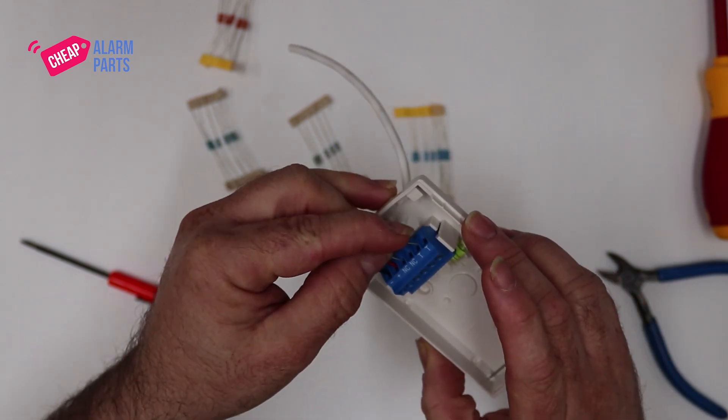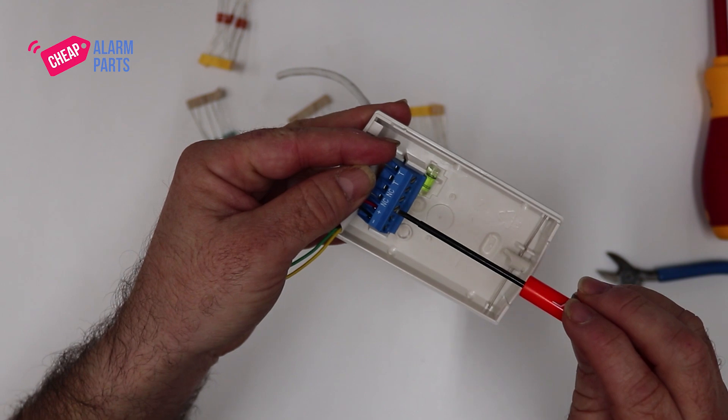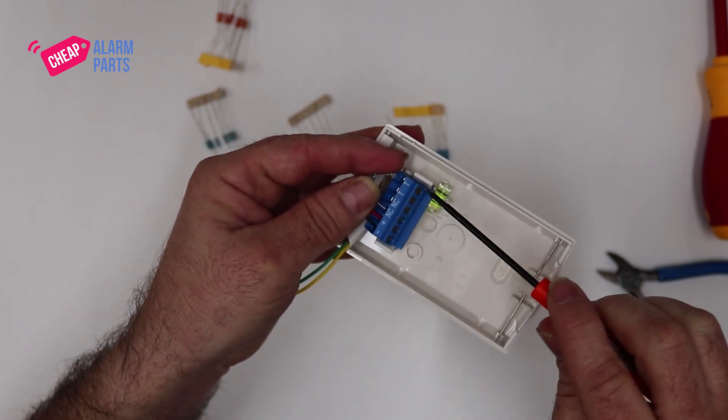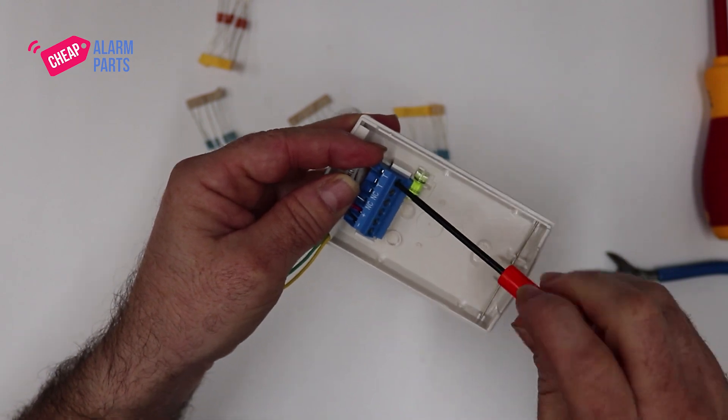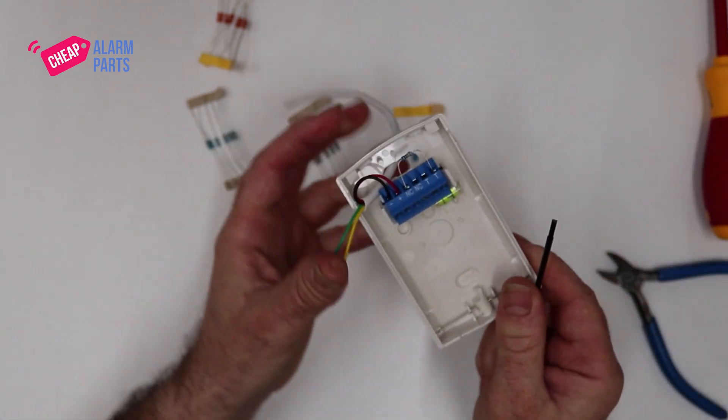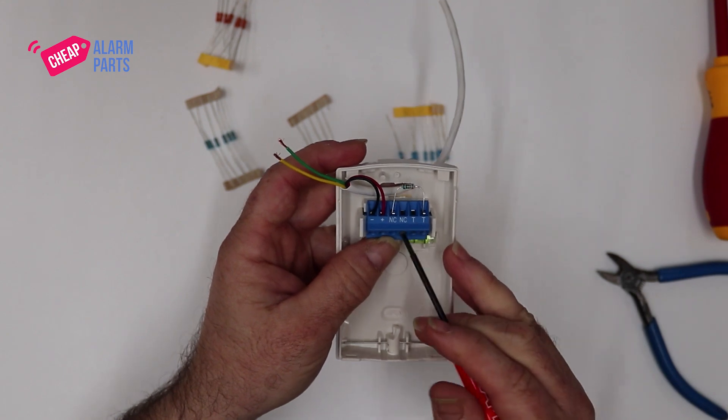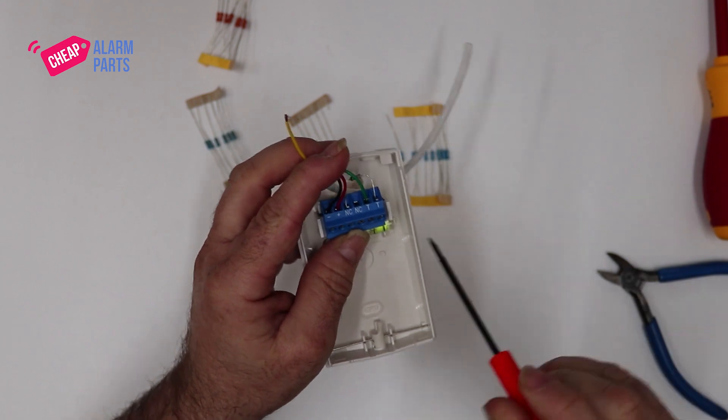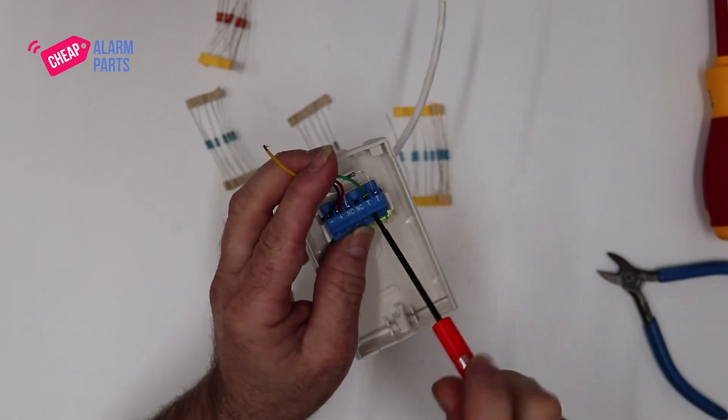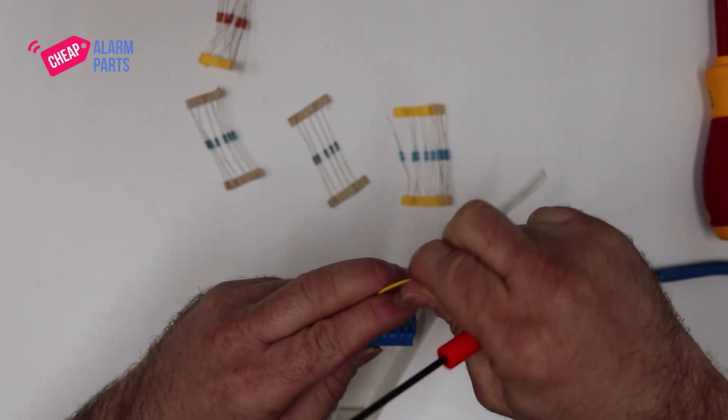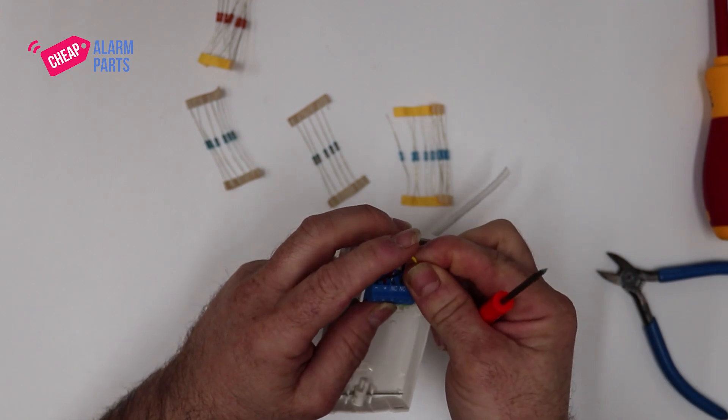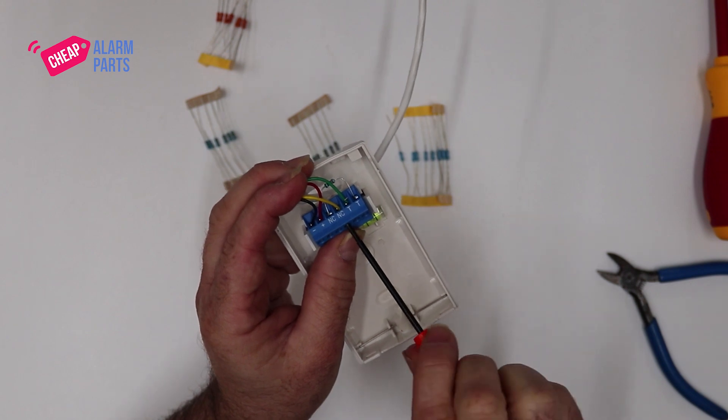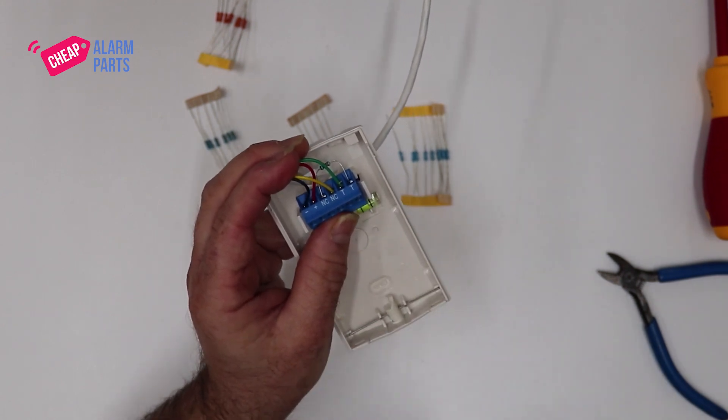And you'll end up with two empty screw terminals and two cables for the zone. So just put one in one terminal and the other one in the other terminal. These are not polarity conscious, so it doesn't matter which way you put in the green cable or the other cable - it will just work.